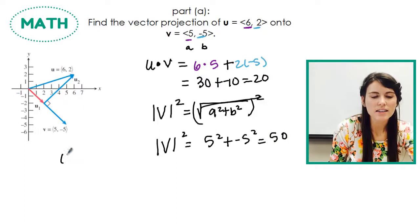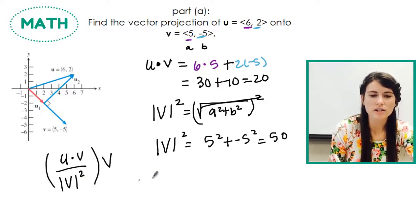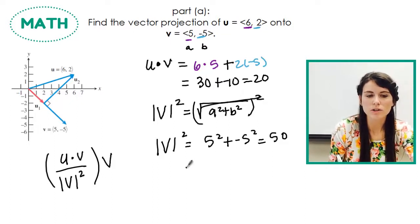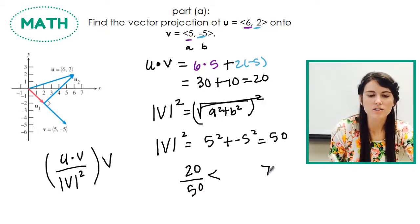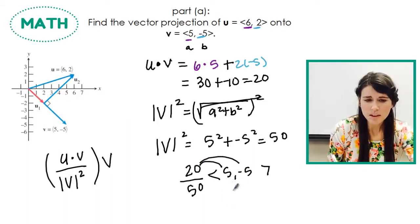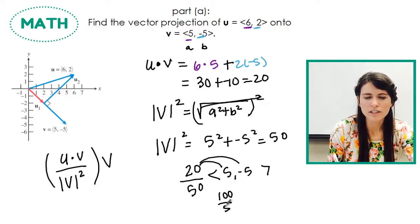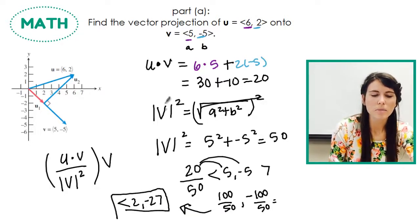So then my formula says take the dot product of u and v over the magnitude of v squared and then multiply that by the vector v. So now that I have these numbers, I'm going to do 20 over 50. That's my parenthesis right here. And I'm going to multiply that by my vector v. So this is going to become my scalar. So my vector v is 5 negative 5. So I'm going to multiply each component by that. That's going to give me 100 over 50. And then negative 100 over 50. So that gives me, let me write that over here. That gives me 2 negative 2. So this right here, this is my projection vector.